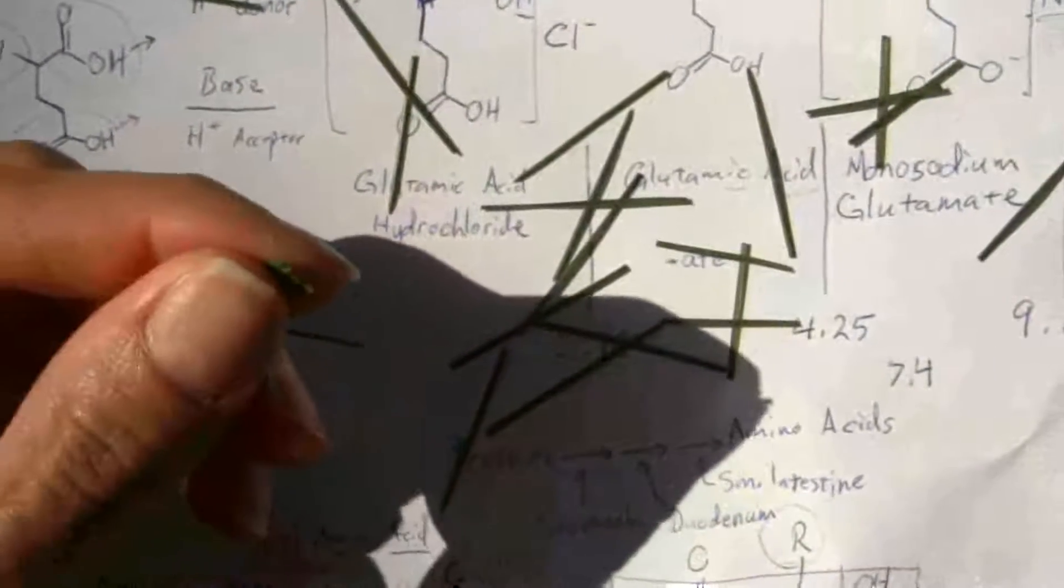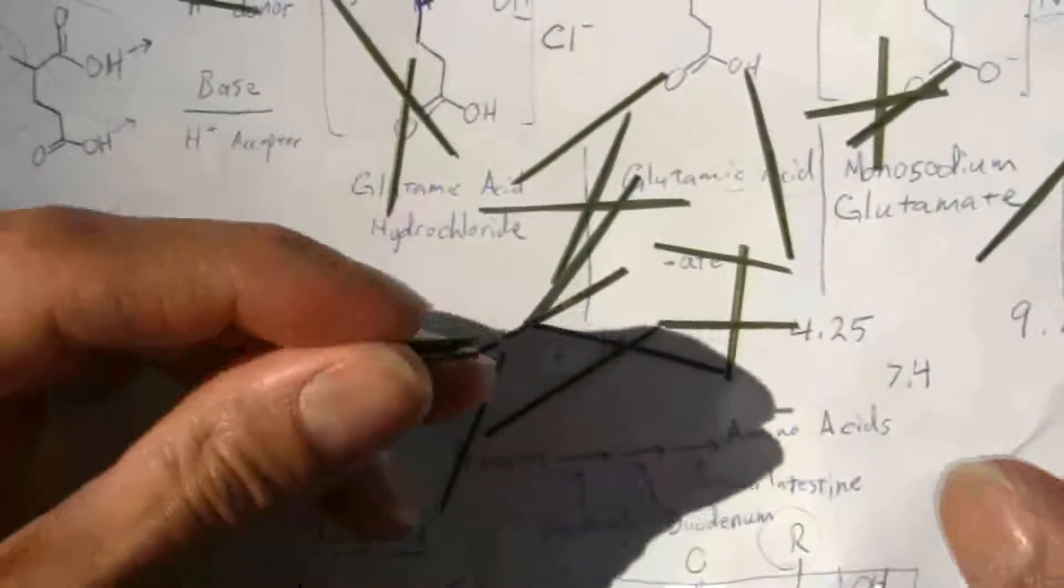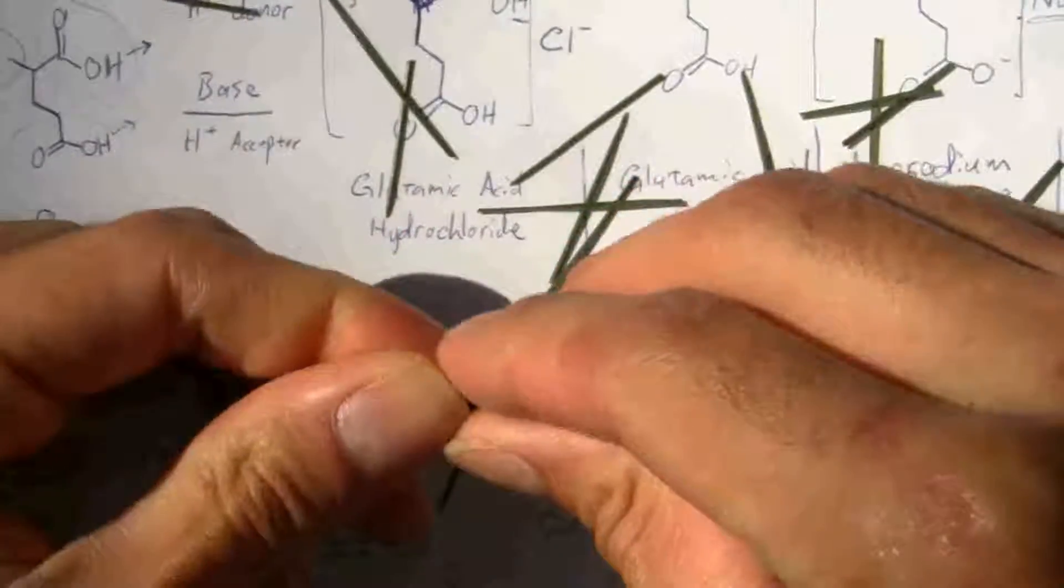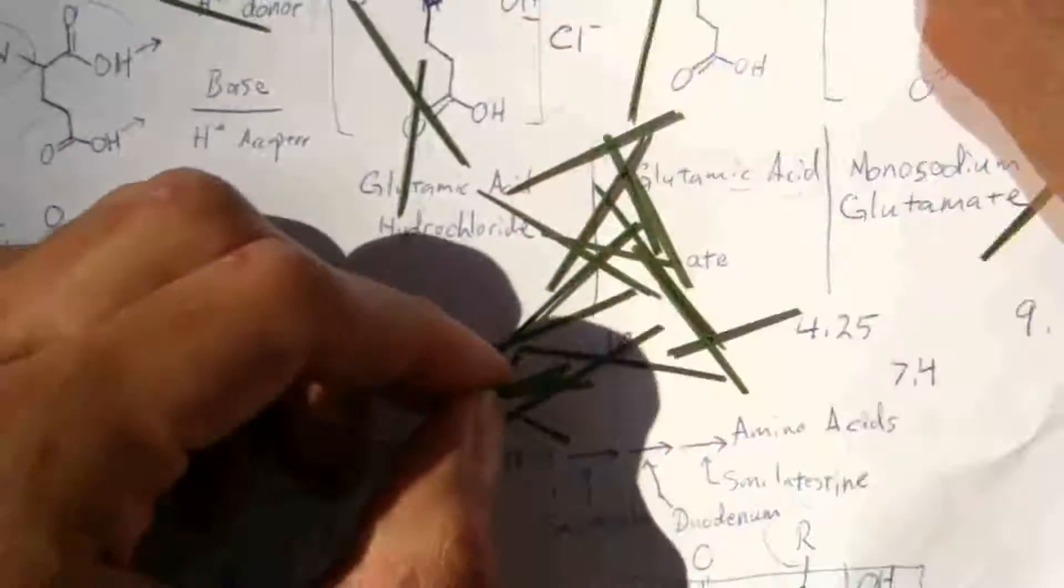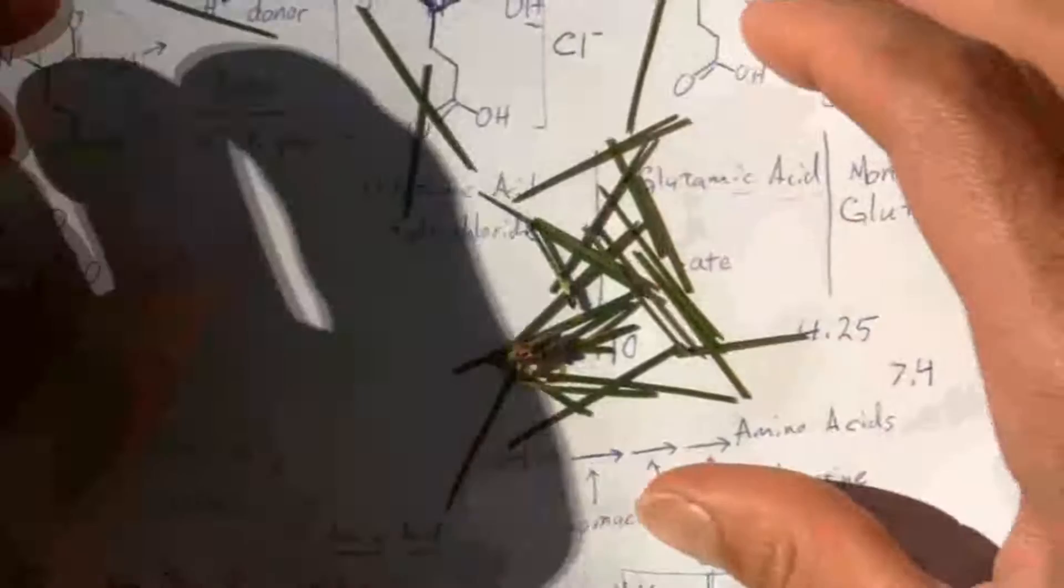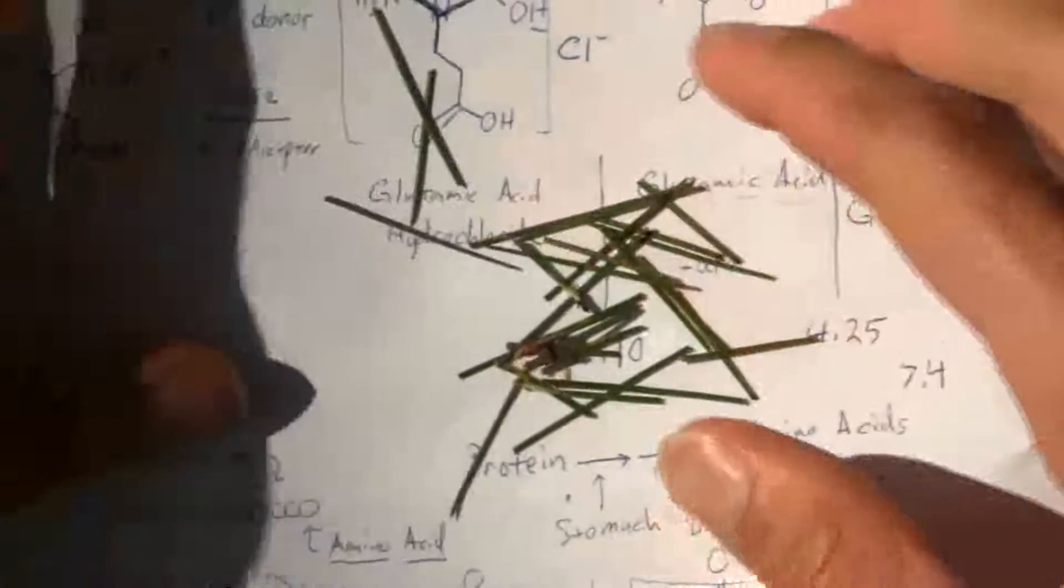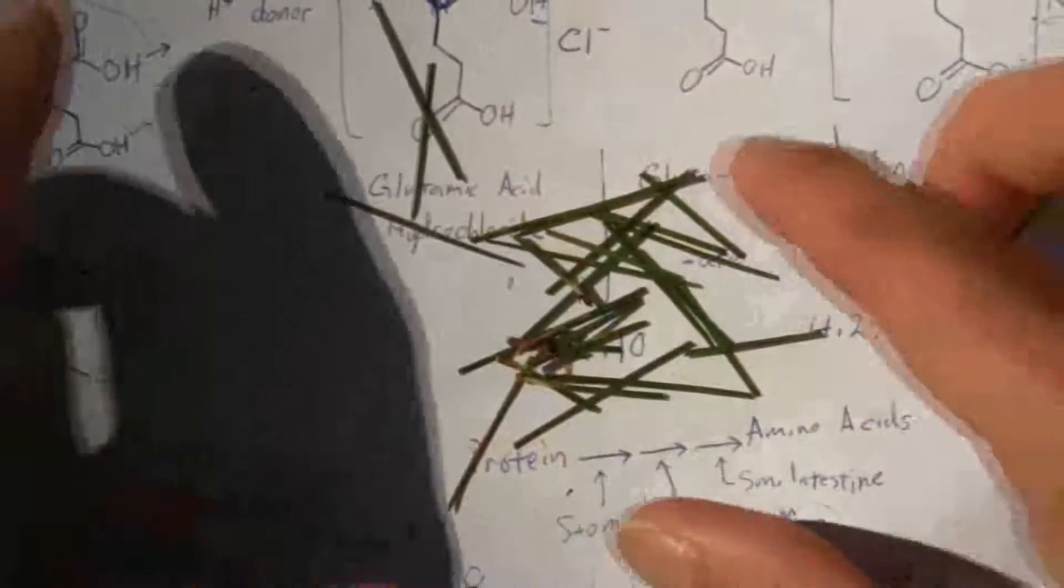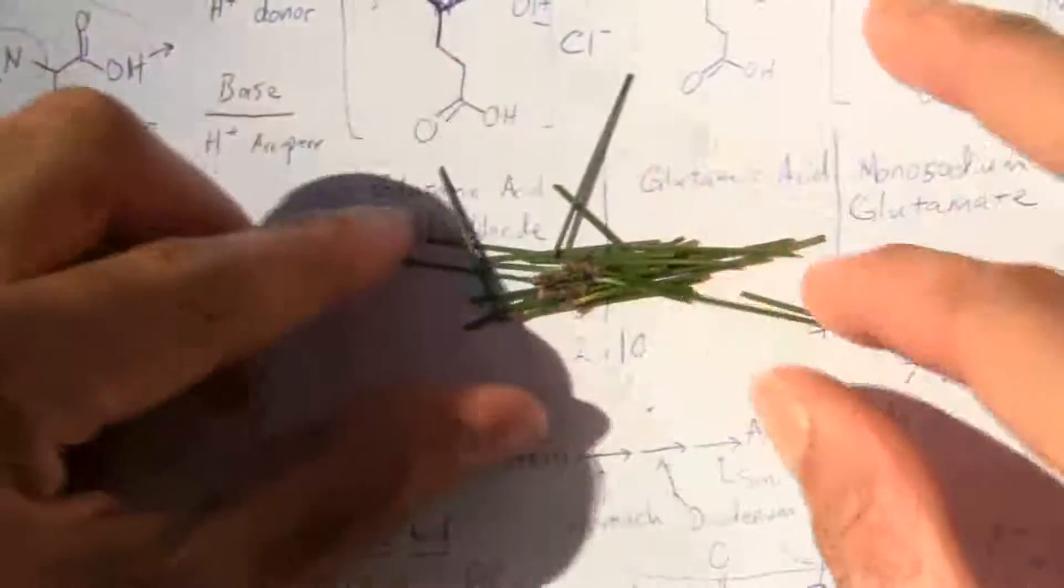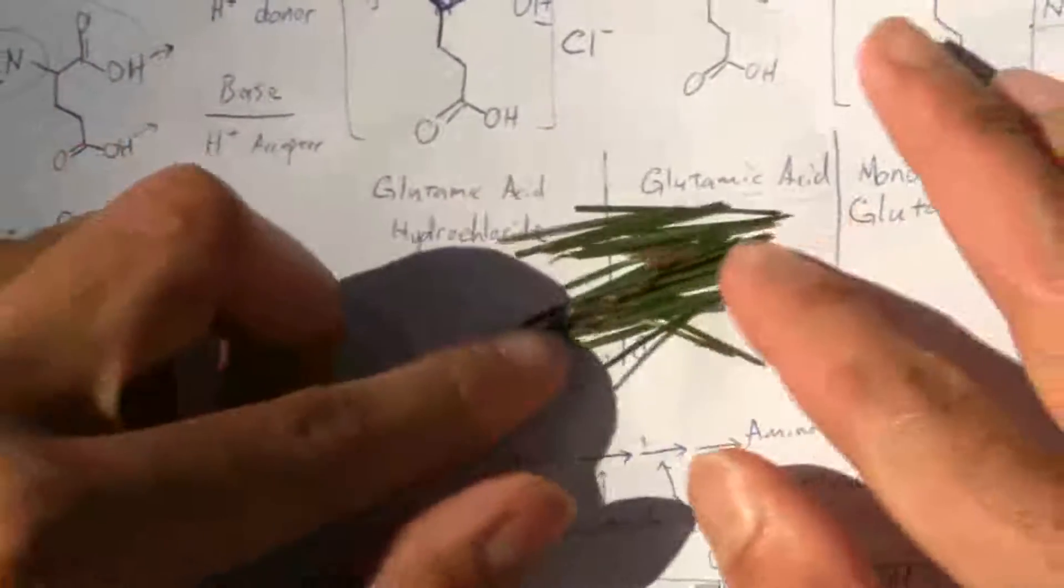It breaks it down into smaller segments. The enzyme in the stomach, pepsin, is what it's called. It only breaks certain of those peptide bonds. You recall those are the bonds that hold the amino acids together. It only breaks down certain ones. So we end up with this mixture of shorter chains.